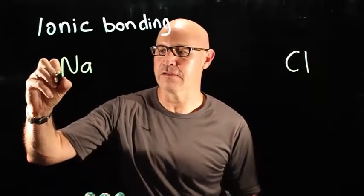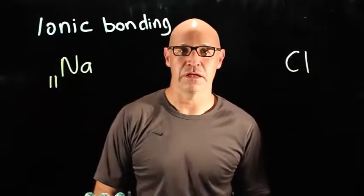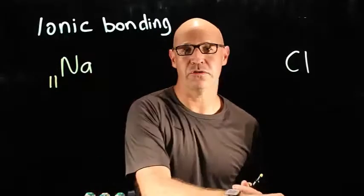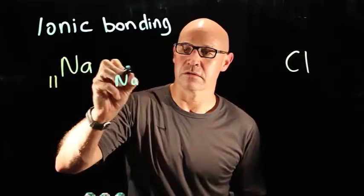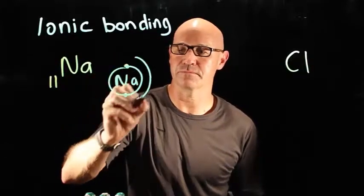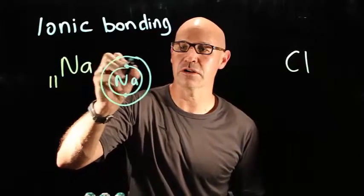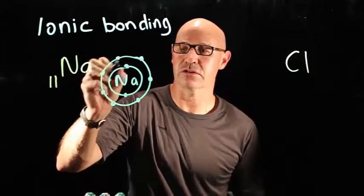Sodium has an atomic number of 11. So that means it's got 11 protons. Let's go ahead and draw the Bohr diagram. It's got 2 electrons in its inner shell. It's got 8 electrons in its next shell, in its second shell.